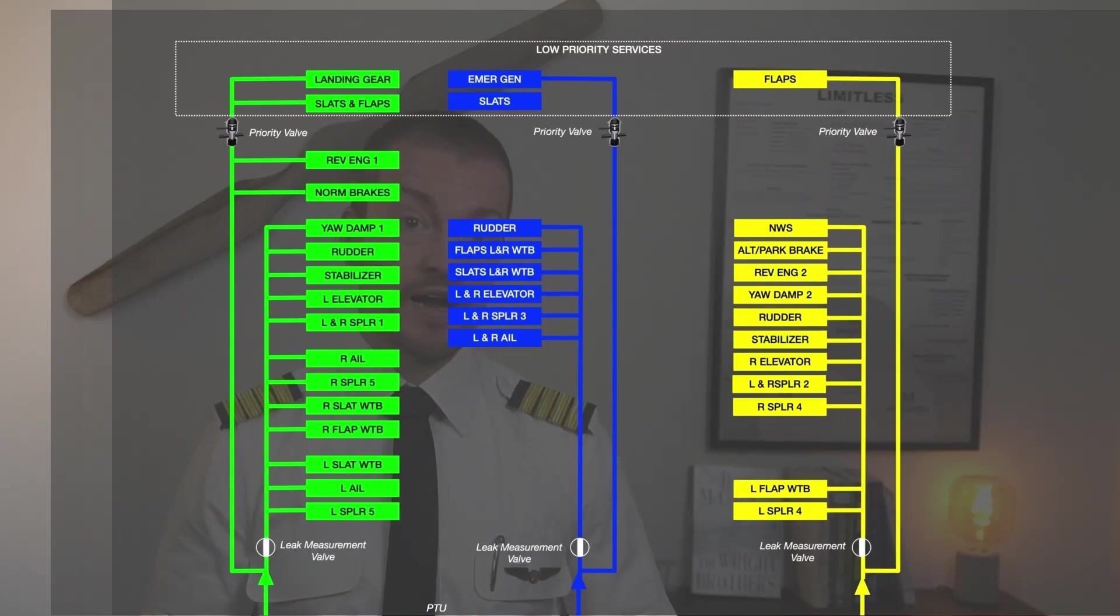We can fly and operate the aircraft without flaps, slats, and landing gear operation, because the landing gear can be put out via gravity, and that does not require us to use hydraulic pressure.